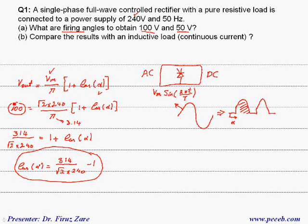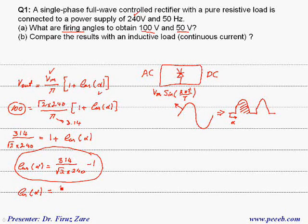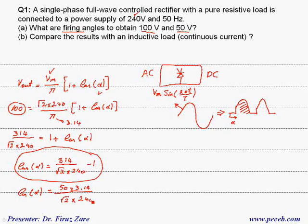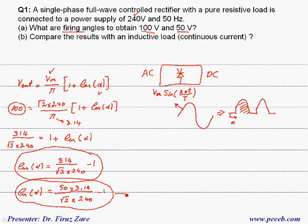We can use the same equation to find the firing angle for 50 volts. In this case, cosine alpha equals 50 times 3.14 over (root of 2 times 240) minus 1. This gives us the firing angle to get 50 volts.